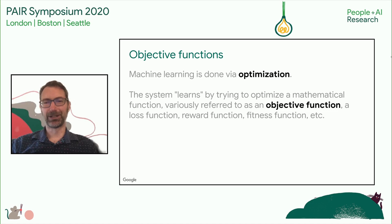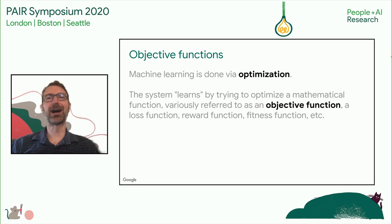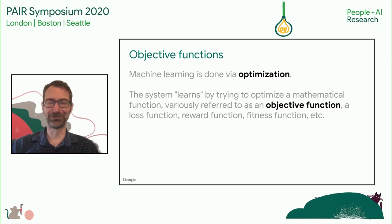Machine learning is essentially done via the mathematical process of optimization. Someone somewhere writes down a mathematical function, and the system essentially tries to optimize this function. One of the ways you can tell this is an important concept is it has so many names — people talk about objective functions in the optimization literature, but you also hear people talk about loss functions, reward functions, fitness functions, and so forth. It's kind of a pick-your-metaphor situation, but the point really is that we have a mathematical function that the system is trying to optimize.